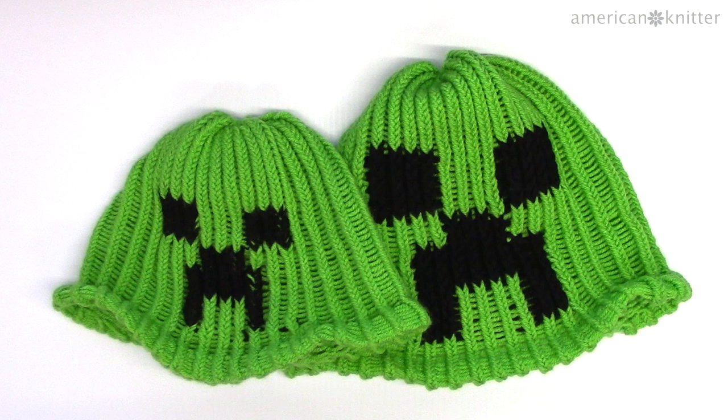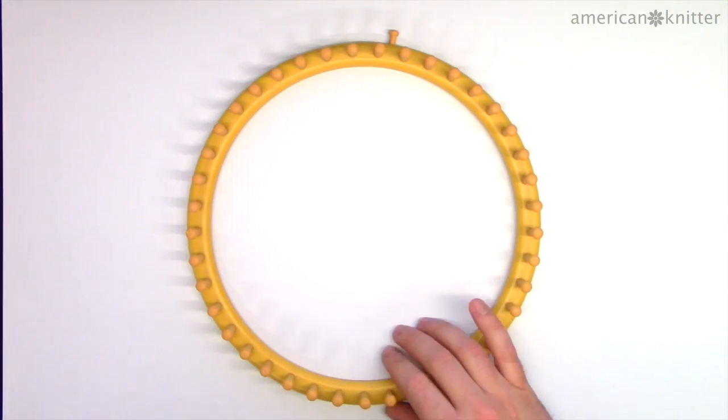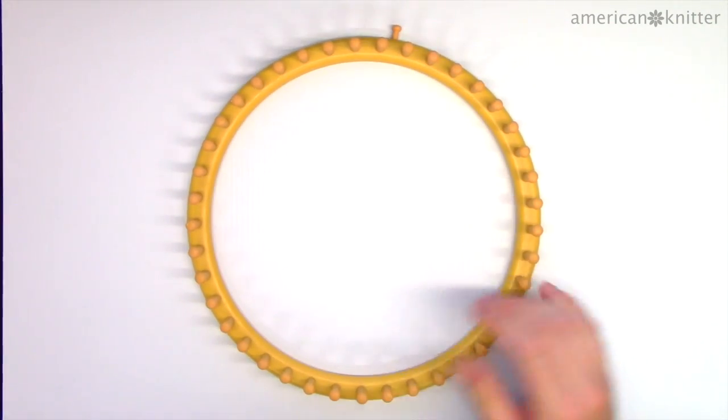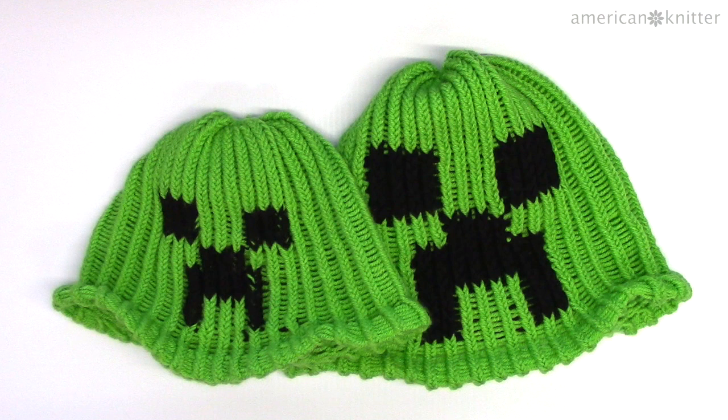There are patterns available for both child and adult size beanies and I'll put a link to them in the description below. But for this video, I'll be using a 41-peg Nifty Knitter brand loom for the youth to adult size beanie. If you are making a child size beanie, just be sure to pay attention to the differences in the pattern. But the principles I will show you are the same for either size.